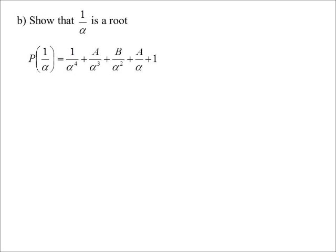Oh, interesting. 1 on alpha to the power of 4, A on... Oh, well, let's make it all one fraction here. Denominator will be alpha to the power of 4, but look what happens on top. I get 1 plus A alpha plus B alpha squared plus A alpha cubed plus alpha to the power of 4.